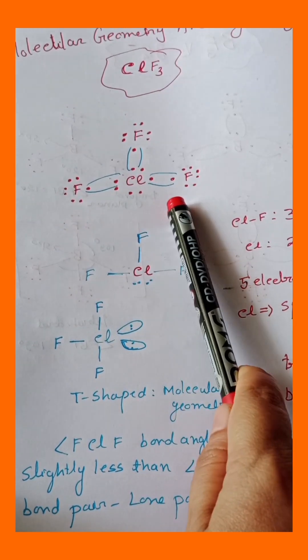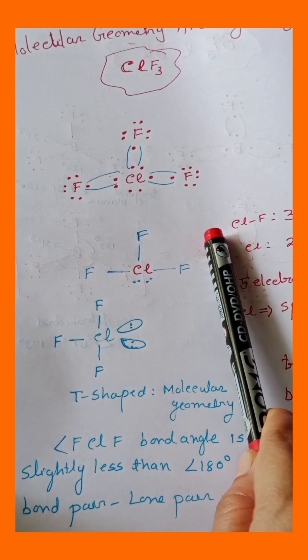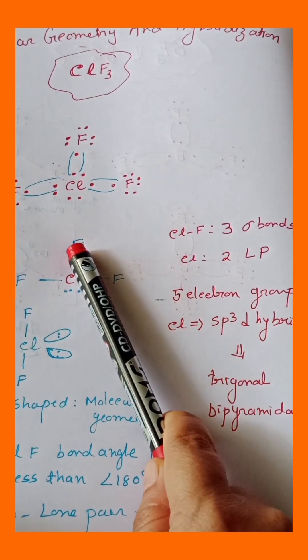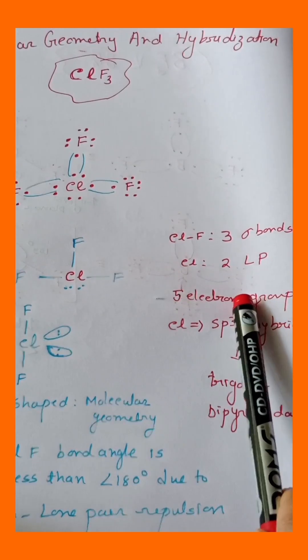Now chlorine will share 1 electron each with the 3 fluorine atoms and it will form 3 covalent bonds. So that means in this molecule chlorine has 3 sigma bonds and 2 lone pairs.